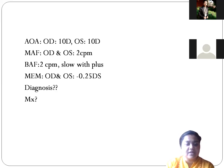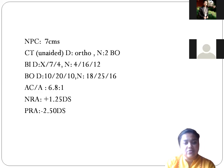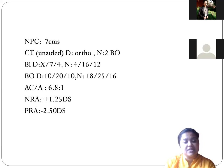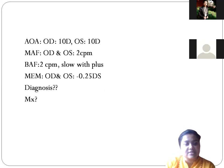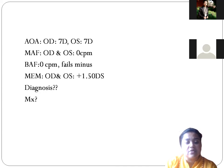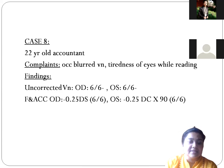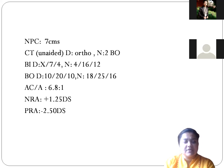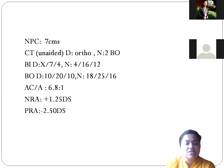So here, since accommodative excess is present, we can give plus lens therapy to relax accommodation. We cannot prescribe plus lenses outright because the patient already has minus 0.25 refractive error. Instead, we will check if the patient can relax accommodation using hart chart exercise. Initially, the patient will find it difficult — because his complaint is blurred vision and tiredness, meaning he can accommodate but gets fatigued due to excess accommodation. We'll give plus lens therapy with hart chart exercise.